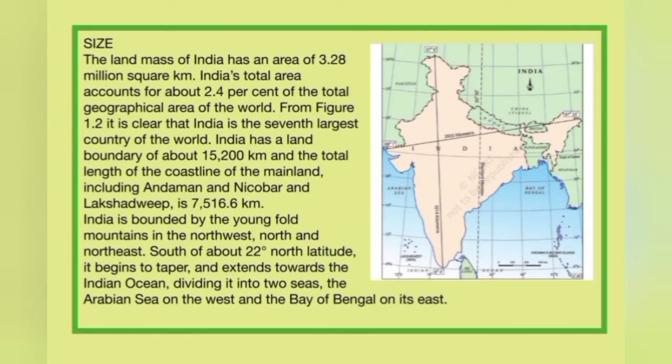Now we will talk about India's size. India's land mass has an area of 3.28 million square kilometres. This total area constitutes 2.4% of the total geographical area of the world. So India's area is 3.28 million square kilometres, which is 2.4% of the world's total geographical area.